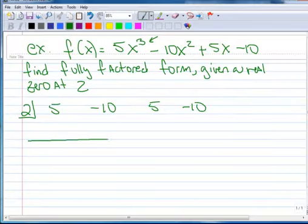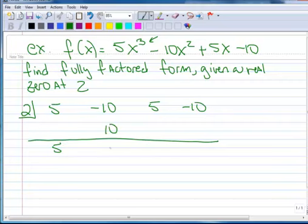So let's set up our synthetic division. Drop the 5, 2 times 5 is 10, that adds up to 0, 2 times 0 is 0, that adds up to 5, 2 times 5 is positive 10, that adds up to 0. We have a remainder of 0, that also tells us that this is a factor.